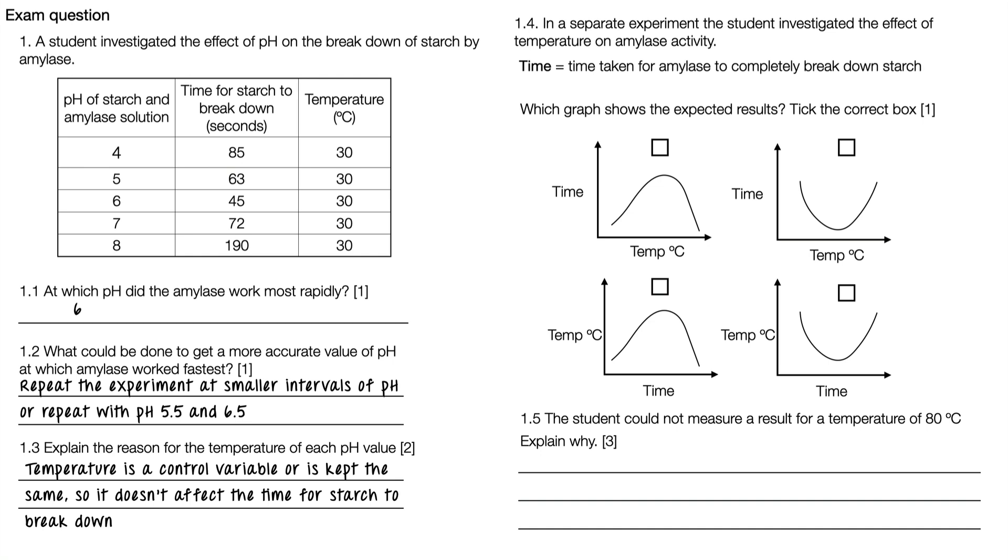For 1.4, in a separate experiment the student investigated the effect of temperature on amylase activity. Now we're testing temperature and not pH. By time we mean the time taken for amylase to completely break down the starch. So which graph shows the expected result? Tick the correct box.